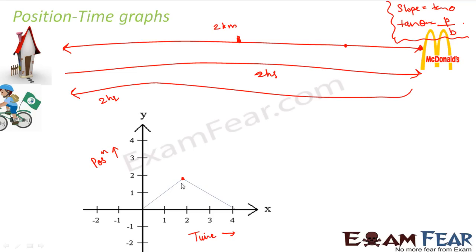Once the object reaches McDonald's, it starts moving in the opposite direction. Since we are talking about displacement, direction plays a role as displacement is a vector quantity. The direction gets reversed and the position changes back with time: from 2 km it goes to 1.5, then 1, then 0.5, and finally back to 0. That is how the position-time graph looks — whereas in the distance-time graph we were only tracking total distance covered, not position at each instant.